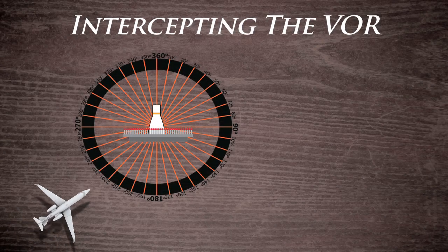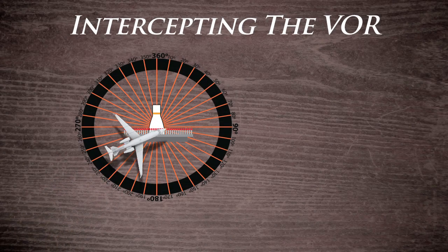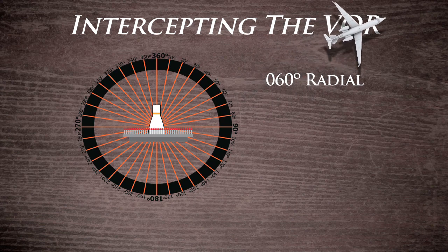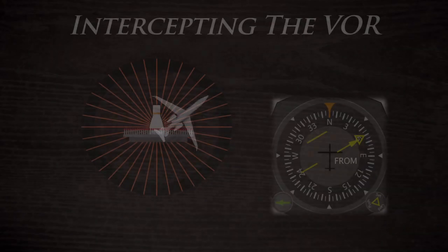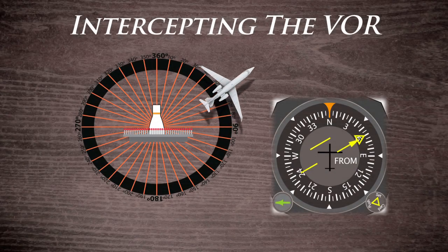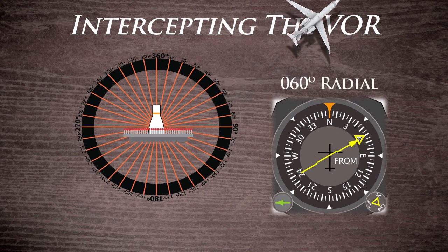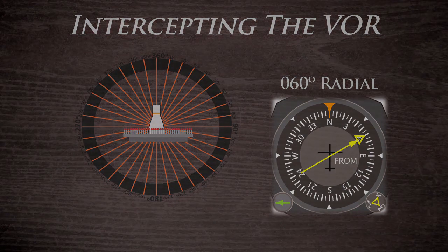Upon arriving at the station, select the outbound radial you wish to fly from. Change your heading to approximately the desired radial. The cone of confusion will not be left until a few moments after passing the VOR. Once the CDI stabilizes, change heading either right or left to bring the CDI needle into the center and ensure you are receiving a FROM indication. Once that is accomplished, you are now established on the outbound radial and heading away.